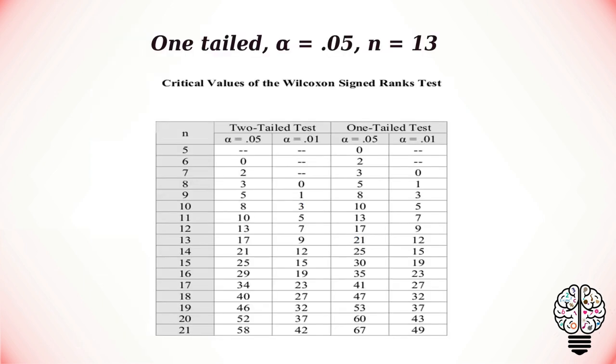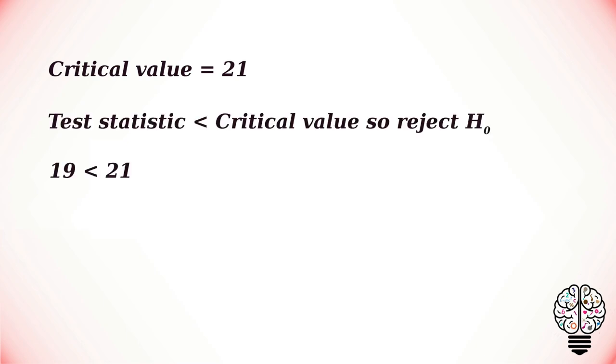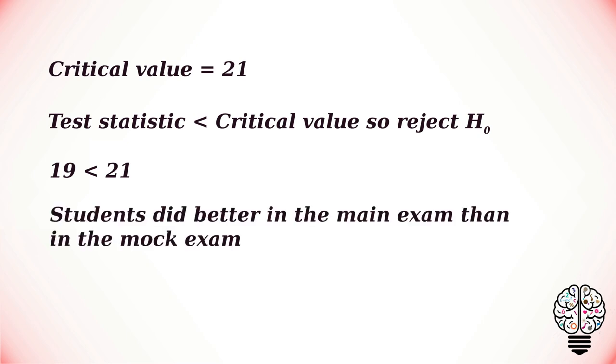Now to find the critical value we have to go to the Wilcoxon table. We have to search for our critical value in the one-tailed area with our significance level 5% and where n equals 13. We get the critical value as 21. Our test statistic 19.5 is less than our critical value that is 21, so we have to reject the null hypothesis. Our test conclusion is that the students did better in the main exam than in the mock exam.